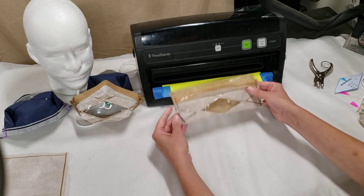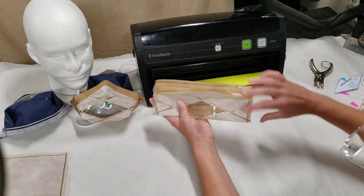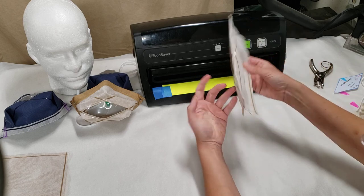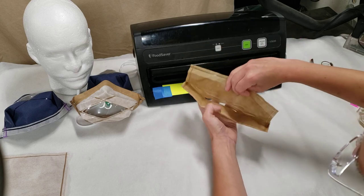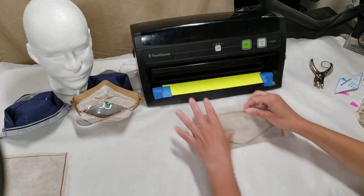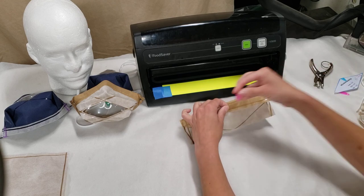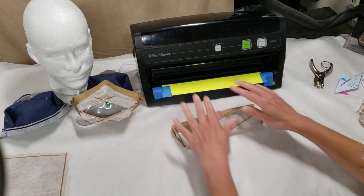Once I've done that you can see the angle of the seal on both sides there and I've created a pouch. Now I put that bottom three quarters of an inch fold back in.